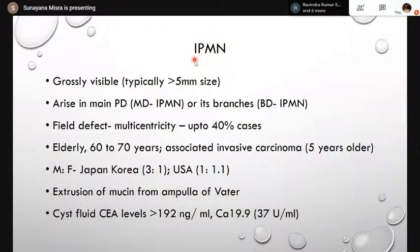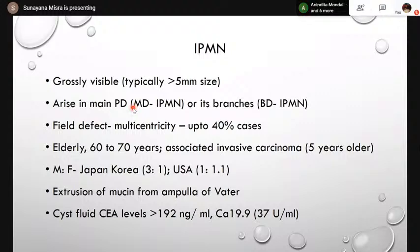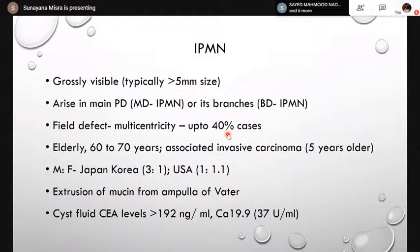Intraductal papillary mucinous neoplasms are grossly visible neoplasms, typically more than five millimeters, usually more than one centimeter in size. They arise from the main pancreatic duct or side branches and are associated with multi-centricity due to a field defect — seen in up to 40 percent of cases. So a patient resected for pancreatic head IPMN may later develop IPMN in the body or tail. Elderly population is affected, 60 to 70 years; if associated with invasive carcinoma, the patient group is five years older.